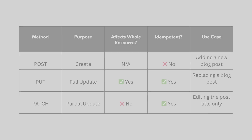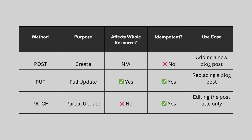We can summarize this in a table comparing POST, PUT, and PATCH. POST is to create a new resource, and it is not idempotent — sending it twice will create two new posts. An example would be creating a new blog post. PUT is for doing a full update on your resource, it is idempotent, and a use case would be replacing a whole blog post. PATCH is a partial update, it is idempotent, and a use case would be updating just the title of a post.